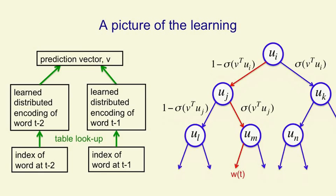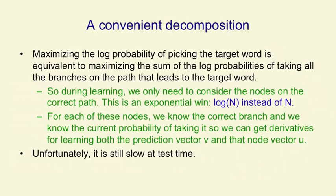And that means we'd like the sum of their log probabilities to be as high as possible. So we benefit from a nice decomposition here that when we try and maximize the probability of picking the correct target word, we're really trying to maximize the sum of the log probabilities of taking all the branches on the path that leads to that target word.